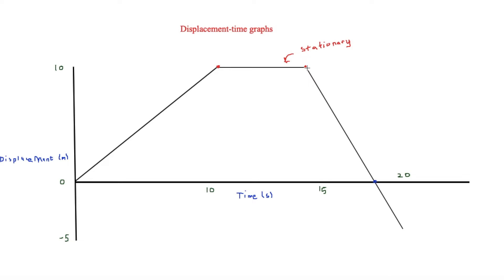Then they start moving backwards, and at around 17.5 to 18 seconds it shows that displacement is equal to 0 — so essentially they are back to where they started. But then at the end, the overall displacement is going to be minus 5 metres.